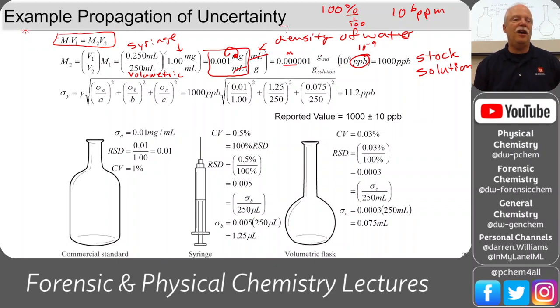Let's do the uncertainty analysis. This is all multiplication and division. So we have the RSD for A, the RSD for B, the RSD for C. I have three parts. I have a volume 1, volume 2, and an M1. And so here's my commercial standard, you know, the 0.01, the concentration piece. I have the 125 over 250 for my syringe. See, here's the 125 and 250. And here's the 75 and 250 for my volumetric flask. So that's the RSDs for each of these. You square them, add them. Take the square root times your value that you calculated from the actual mathematical equation, and we get 11.2 parts per billion. So that's the uncertainty in my stock solution. My stock solution is 1,000 parts per billion plus or minus 11.